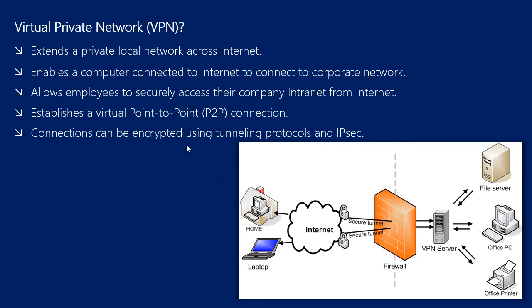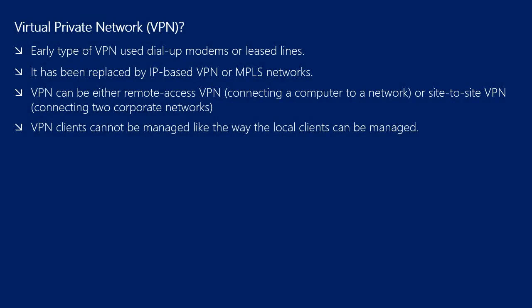These connections can be secured and encrypted using tunneling protocols and IPsec. Early types of VPN implementations used dial-up modems or leased lines. These networks are not considered true VPNs because they passively secure data being transmitted by the creation of logical data streams. Dial-up connections are very slow and leased lines are very costly. They have been replaced by VPN based on IP networks and MPLS networks due to significant cost reductions and increased bandwidth.